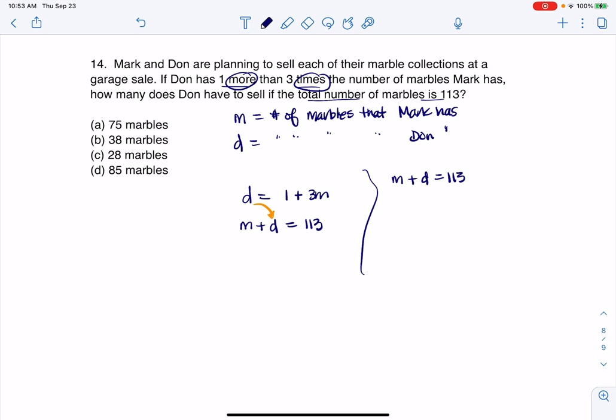Okay, so like I said, instead of D here, I'm going to substitute in one plus three M. So this is going to be M plus one plus three M equals 113. On the left side there, I have four M plus one equals 113. If I subtract one, I'm going to get that four M equals 112. And if I divide both sides by four, M is 28.